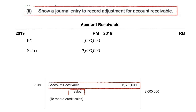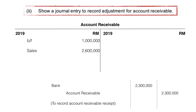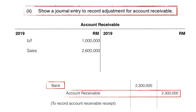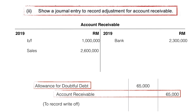Now we go to the next journal entry. The next journal is about the collection of money received from accounts receivable. This will reduce accounts receivable, so we will be recording that amount on the credit side with the word 'bank'. Now we move to the next entry. The next entry is about the write-off amount, which will decrease accounts receivable. We will credit the amount for accounts receivable using the label 'allowance for doubtful debts'.